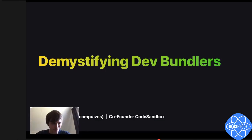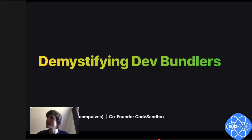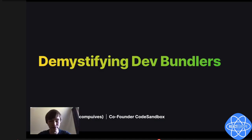Let's get to the talk. My name is Ives van Hoeren. This name is quite hard to pronounce also in the Netherlands, so you can call me Ives, or Eve. My friends also have trouble with pronouncing my name, so they call me Flip. If you want to call me Flip, that's fine as well.